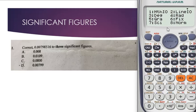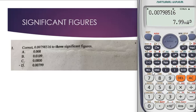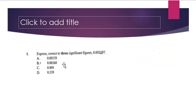For decimal places we used Fix (6), but for significant figures we use 7. Click 7 then choose 3 for three significant figures. The answer shown doesn't match any option directly, so click Shift then the Eng button, then Shift and Eng again — do that twice — and you'll arrive at the correct answer: 0.00799.